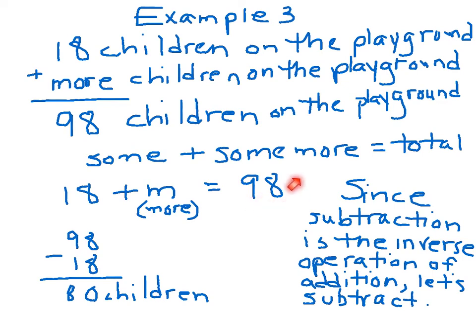Since subtraction is the inverse operation of addition, let's subtract. We take our 98, which is our total. We subtract our sum, S-O-M-E sum, and that's 18, and we get 80 kids. So now we know there were 18, 80 more ran onto the field, and now we have 98. Does that make sense? Yeah, it does. Okay?